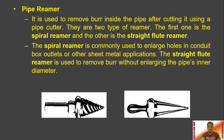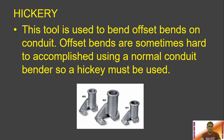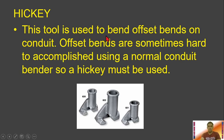Then we have the conduit bender, which is another name for the hand pipe bender. It is used to bend conduit up to 90 degrees. Then we have the hickey — a tool used to bend offset bends on conduit. Offset bends are sometimes hard to accomplish using a normal conduit bender, so a hickey must be used.